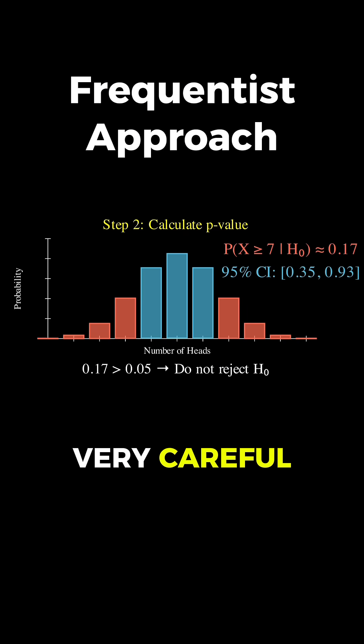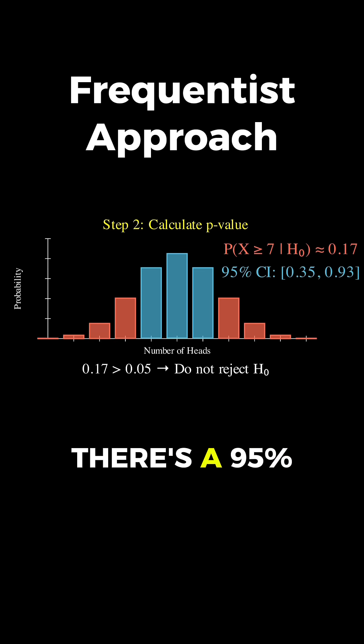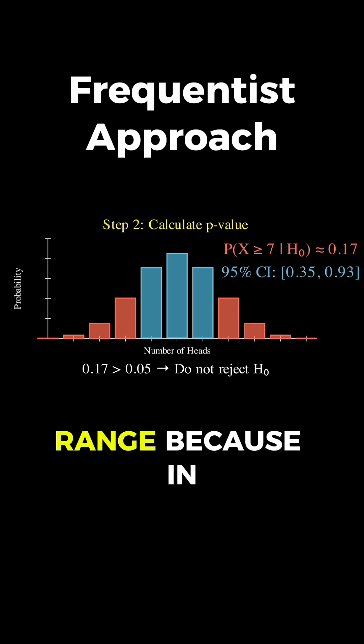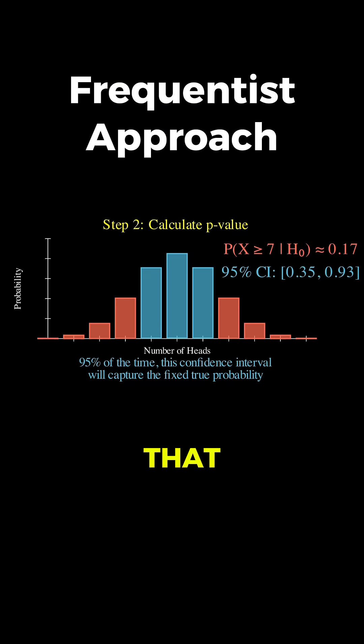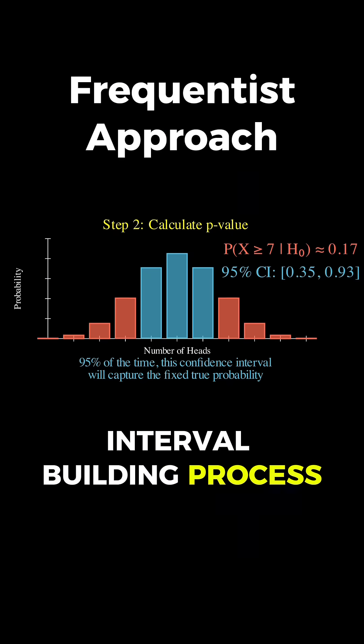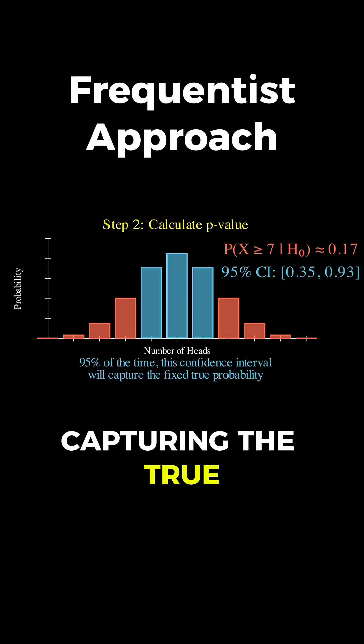The frequentist is very careful about how he interprets this interval. He's not saying there's a 95% chance that the true probability lies in this range, because in his worldview, the true probability is fixed. Instead, he's saying that if we were to repeat the data-gathering and interval-building process many times, then about 95% of those intervals would succeed in capturing the true fixed probability.